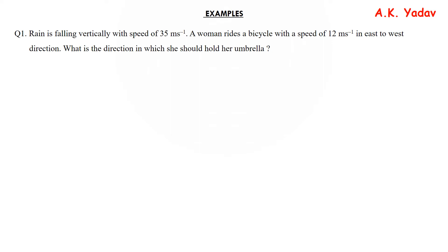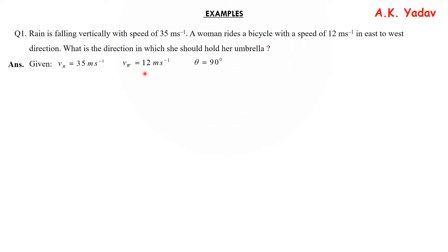Let us do a few examples to understand the concept better. Example 1: Rain is falling vertically with a speed of 35 m/s. A woman rides a bicycle with a speed of 12 m/s in the east-to-west direction. What is the direction in which she should hold her umbrella? Given: velocity of rain = 35 m/s, velocity of woman = 12 m/s, and the angle is 90° because rain is falling vertically compared to the direction in which the woman is moving.